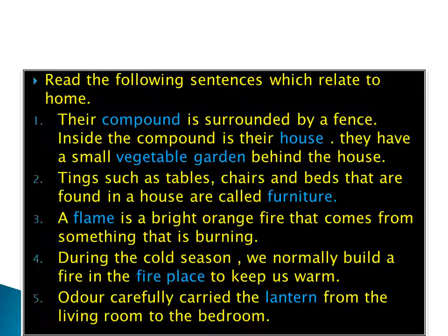'They have a small vegetable garden behind the house.' A vegetable garden is a small farm where they grow things like vegetables — kales, onions, tomatoes, and such things. I don't know if you have a compound at home, but mostly these are found in the rural areas because in towns they are very rare.